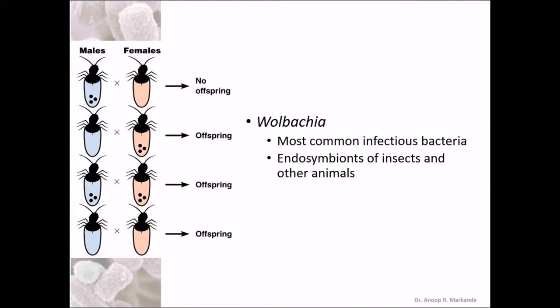Wolbachia is one of the important organisms involved in insect biology. These are the most common infectious bacteria but they are endosymbionts of insects and other animals. Endosymbionts — they are living inside the insects in a mutualistic way of life, as can be seen in this image.